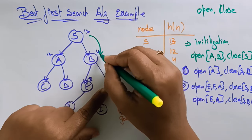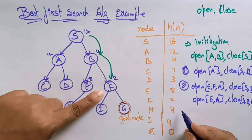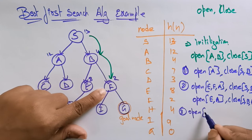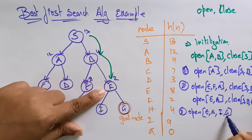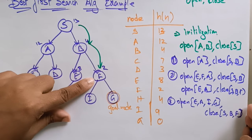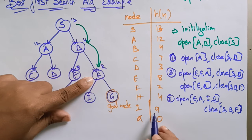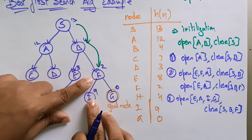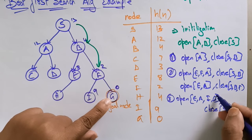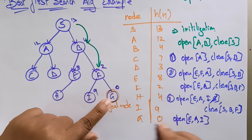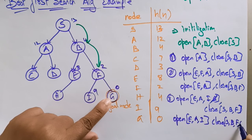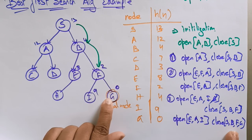In the third iteration, the open list still has E and A. The successors of F are I and G, which are placed on the open list. The heuristic value of I is 9 and G is 0. G has the least heuristic value, so we take G and place it in the closed list: S, B, F, G. G is the goal node — we have reached it!